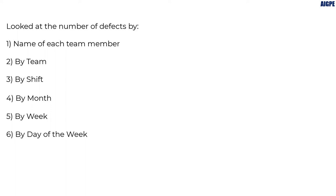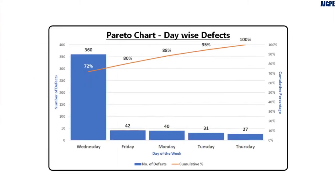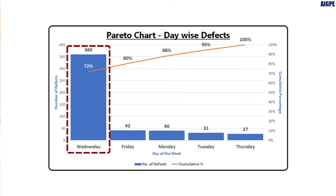Nothing really yielded for the first five options. But when I did the Pareto chart of the number of defects by day of the week, I found the issue. As you can see in this chart, the number of defects in the business process are significantly high on Wednesdays compared to any other day of the week. Wednesdays contribute to 72% of the total defects, and this was the same pattern for multiple weeks. So something was clearly going wrong on Wednesday.